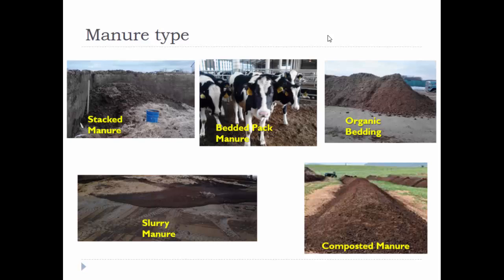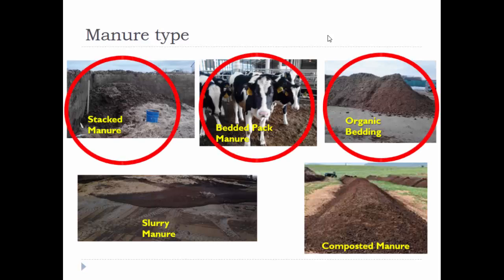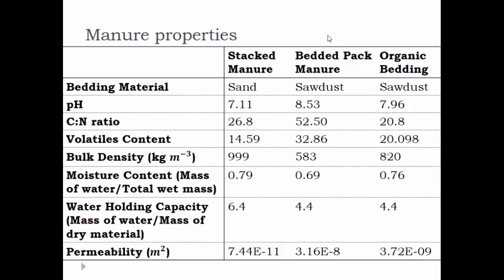In Pennsylvania, we have five common manure types, and in this work we investigated three of them. The manure samples were collected from the Penn State Dairy Barn, and the physical and biochemical properties were summarized in a table. From this table we can see differences among the three manures. The bed pack manure samples had low bulk density and moisture content but the highest permeability. We would like to see how these properties relate to the gas emission rate.